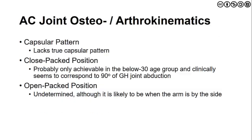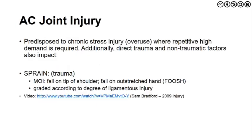The AC joint lacks a true capsular pattern, and its closed-pack position is probably only achievable in the under-30 age group, corresponding to approximately 90 degrees of glenohumeral joint abduction. The open-pack position is likely when the arm is at the side in a resting position. The AC joint is predisposed to overuse — what we call microtrauma, with repetitive high demand — but also to macrotrauma, or direct trauma from one specific high-velocity, high-force injury. There can also be some atraumatic factors that impact this joint.